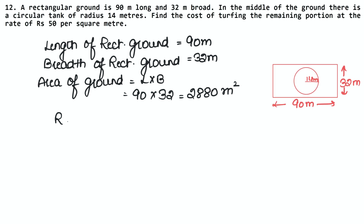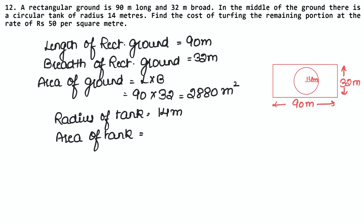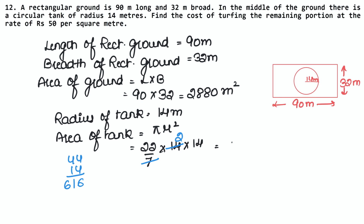Now the radius of the tank is 14 meters. The area of the tank — because it is circular — is π r². The π value is 22/7 and radius is 14 meters. Cancelling 7, we get 22 × 2 × 14 = 616 meter square.